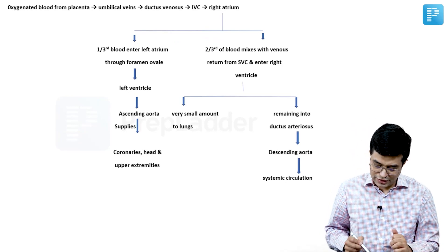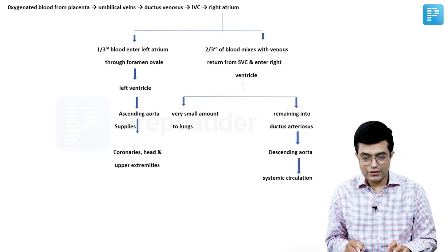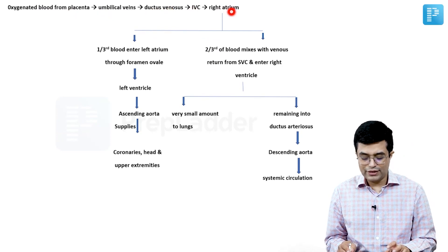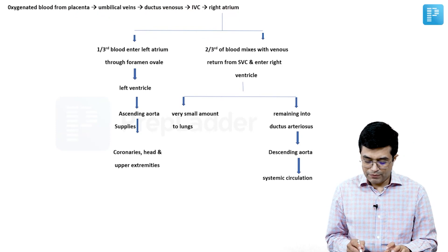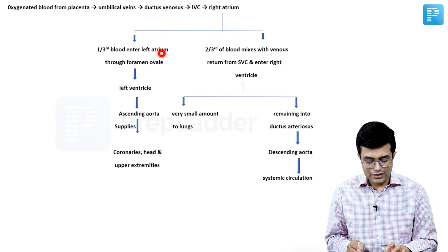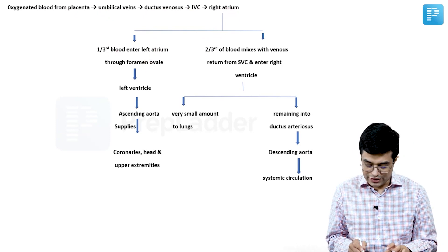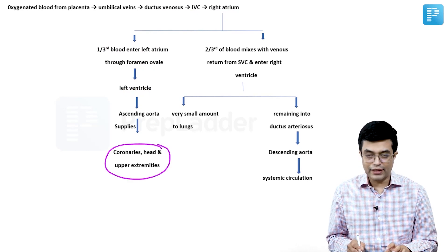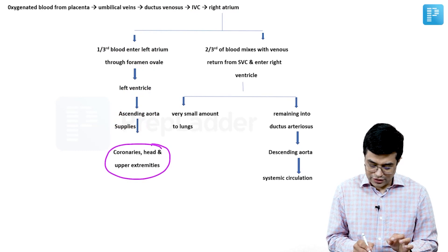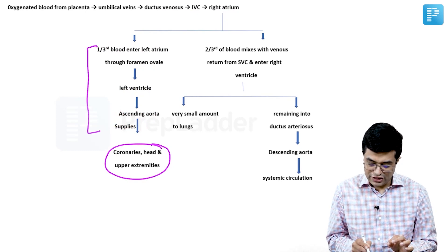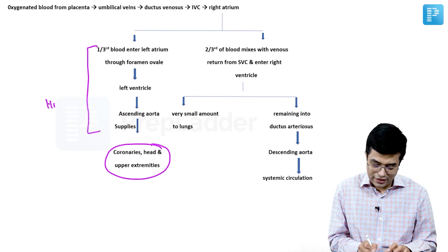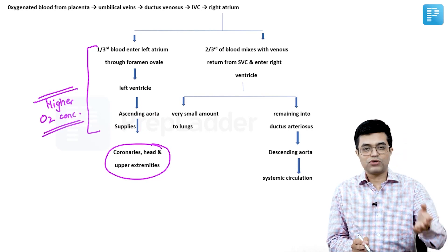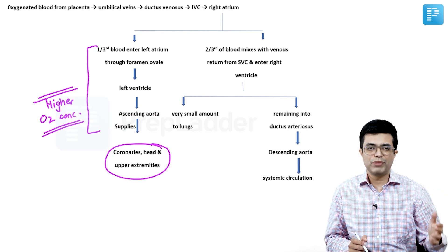The key points are oxygenated blood from placenta. It goes to umbilical veins, passes through ductus venosus, reaches IVC and then enters the right atrium. In right atrium, one third of the blood enters left atrium through foramen ovale and reaches the left ventricle which is supplied via ascending aorta to the upper limb and head and neck. This is important because this is the blood which has a higher oxygen concentration. So the brain receives blood with higher oxygen concentration with relatively less mixing.